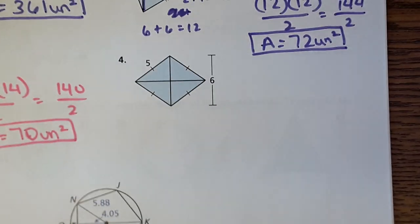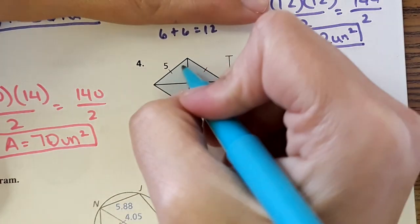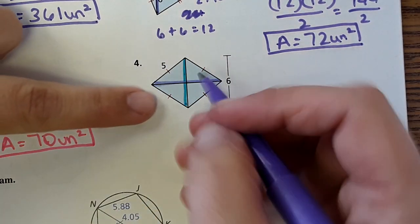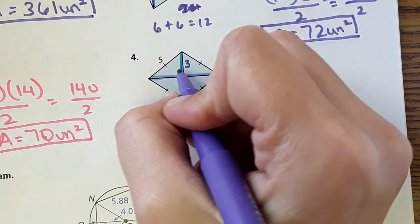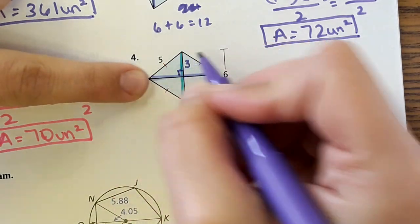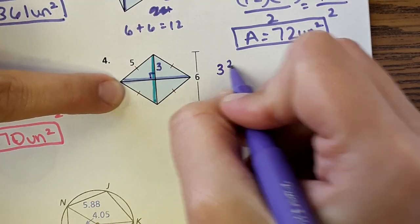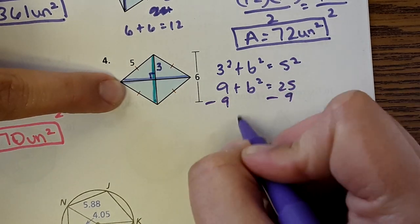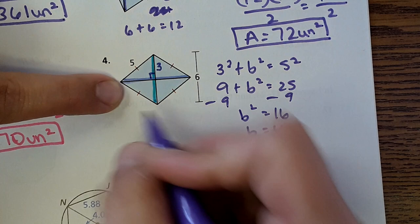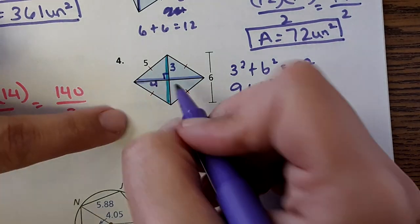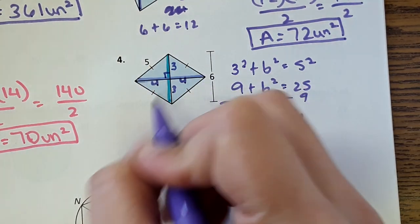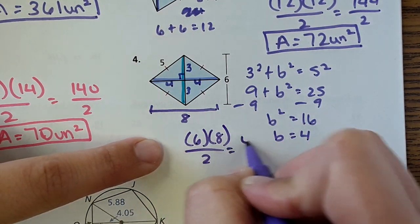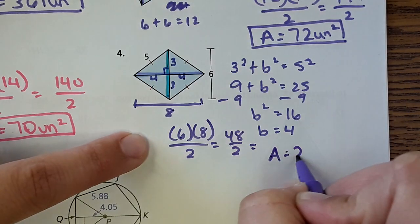Number 4 is the same idea, it just takes it one more step. It shows that this diagonal is 6 units but it doesn't show the length of the other one, so we're actually going to solve for it. If this whole thing is 6 then this part is 3, and this would be a 90 degree angle, so this would be a right triangle. We can use the Pythagorean theorem: 3 squared plus b squared equals 5 squared, so b equals 4. That means this diagonal is 8. So we do 6 times 8 divided by 2, and the area equals 24 units squared.